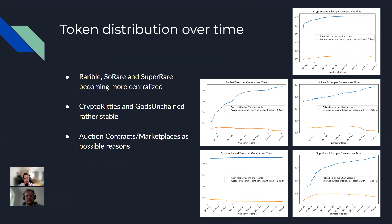We see that Rarible, SoRare, and SuperRare are becoming more centralized, while CryptoKitties and Gods Unchained are rather stable. For Gods Unchained, this is likely due to the architecture, and for CryptoKitties, it's likely due to the decrease in demand. One possibility for the seemingly growing centralization would be auction contracts and marketplaces, which are also included in this dataset.